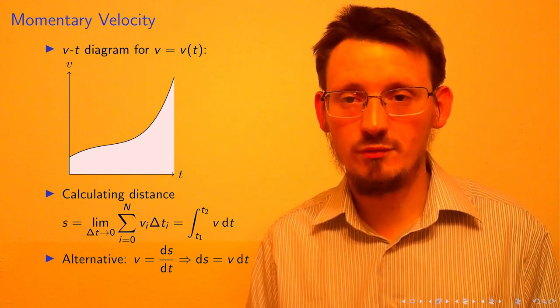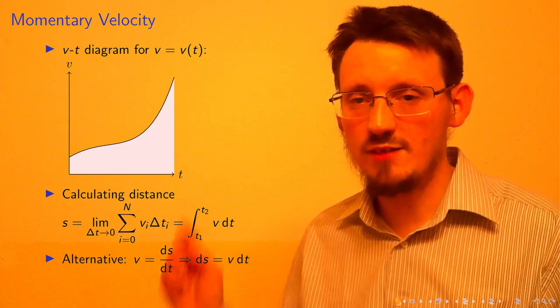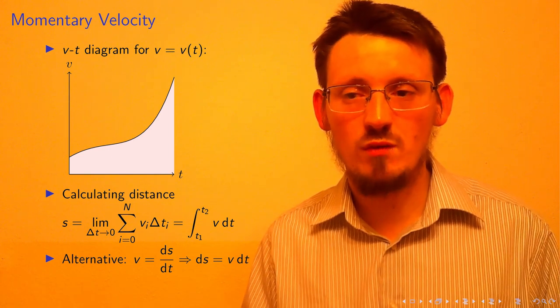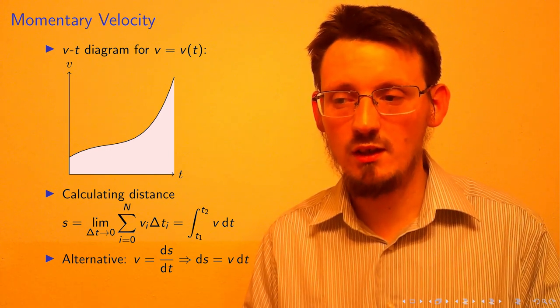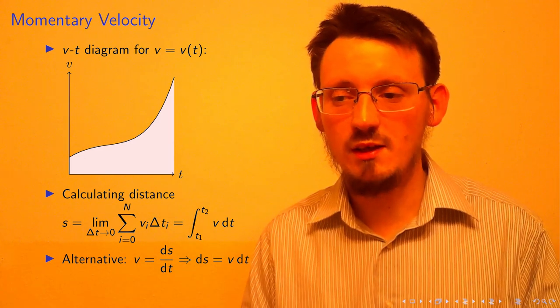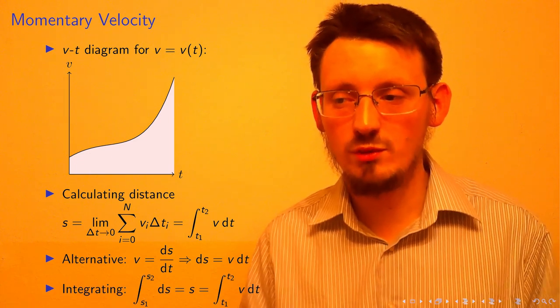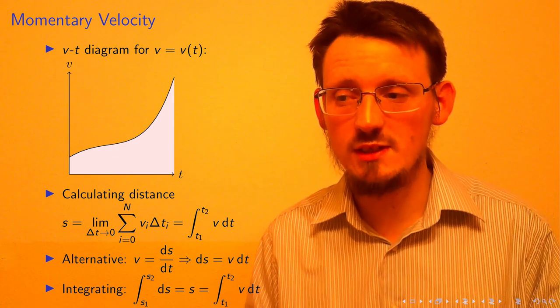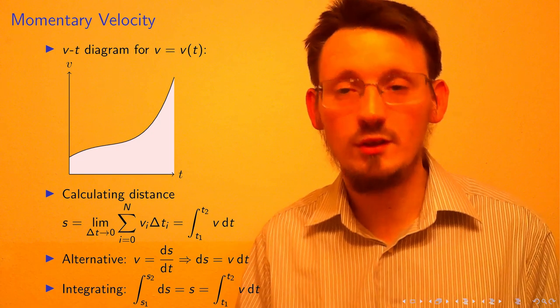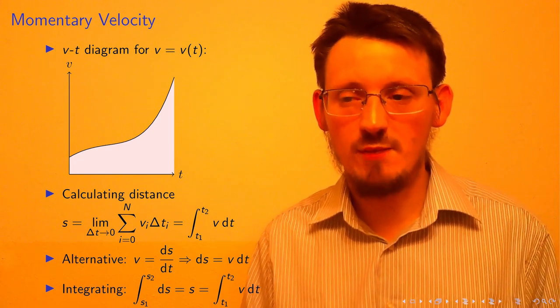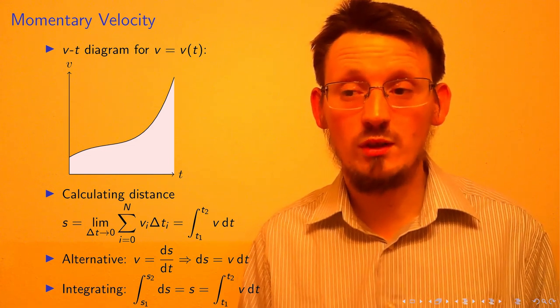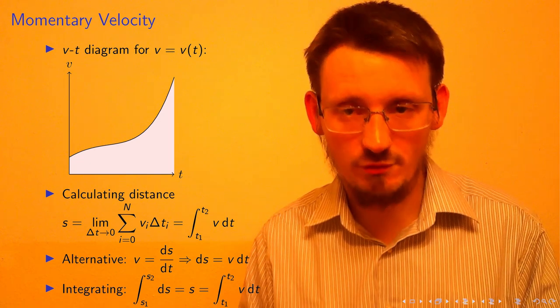Another possibility, I want to show now an alternative how to derive this. With the fraction ds over dt, it can be easily written as V equal to ds over dt. And then solving that equation for ds, which leads then to ds equal to V times dt. Integrating ds from s1 to s2 gives simply the distance s as a result, whereas the integral over V remains. Therefore, we get again the same formula S is equal to the integral over V dt. This is only an alternative to derive the previously mentioned function.